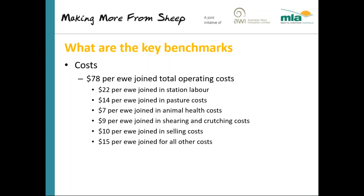In terms of costs — and I must say that it's usually not costs that make most of the difference between the top 20% and average — the most profitable producers never lose sight of their costs and you need to keep them under control. As a per head benchmark, we're looking at about $78 per ewe joined as your total operating costs.